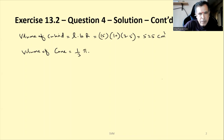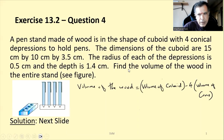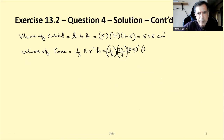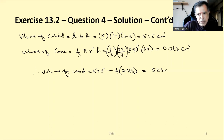Volume of cone = (1/3)πr²h = (1/3)π × (0.5)² × 1.4. Here depth is the height, so we calculate and get 0.366 cubic centimeters. Therefore, volume of wood = 525 − 4 × 0.366 = 523.5 cubic centimeters. That is the solution.